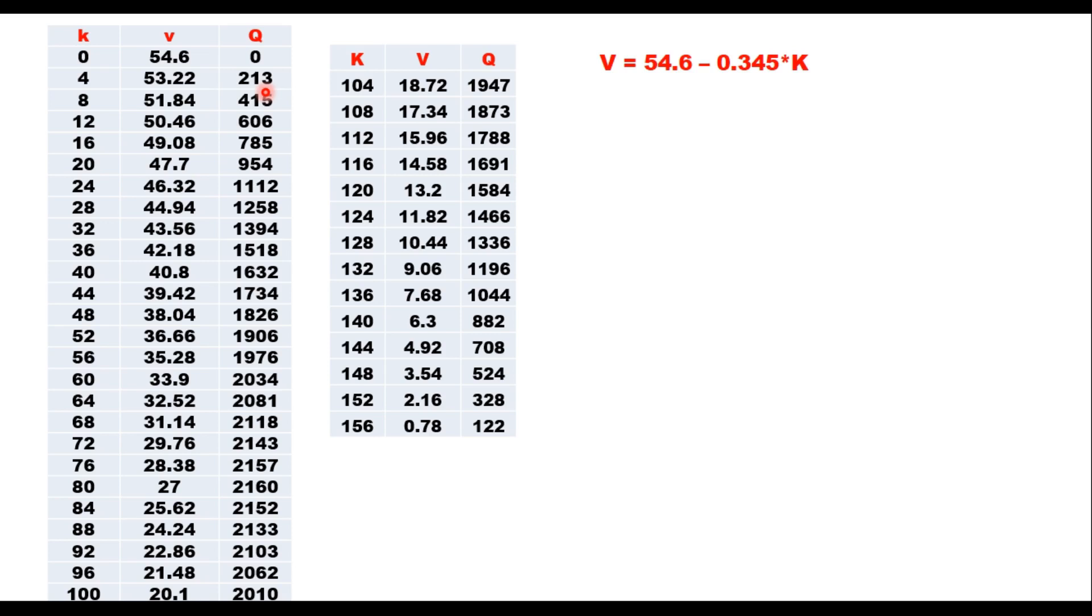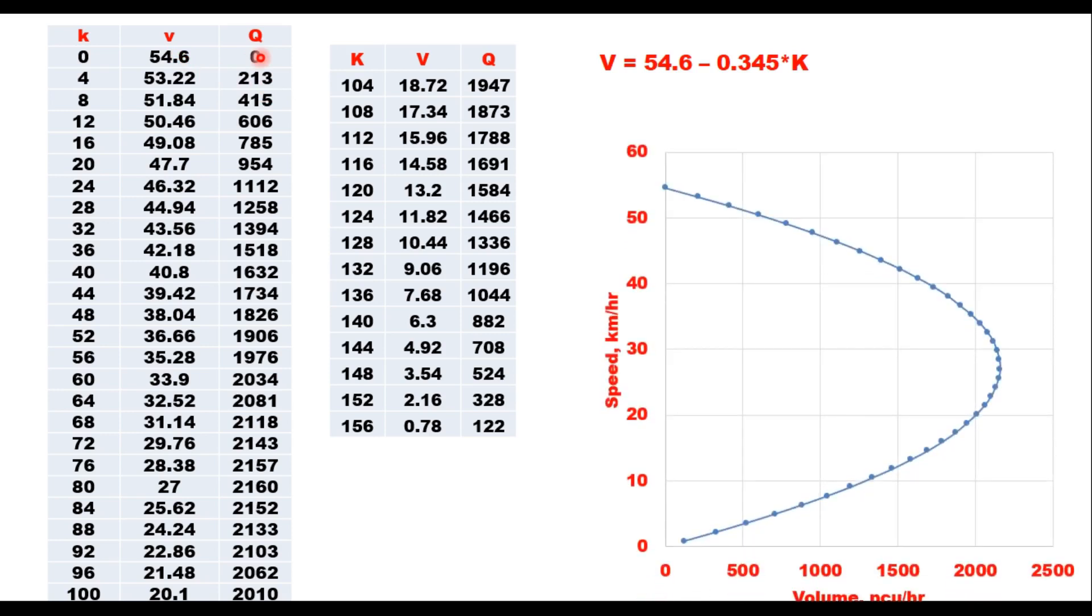Then you make a plot in Excel sheet between speed and volume. So that plot will be like this. You see the complete shape of the graph is now developed and that is theoretical curve. The capacity here, you can see the point where this curve turns, and that is the capacity, 2157 PCU per hour.